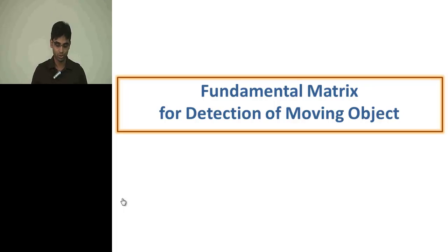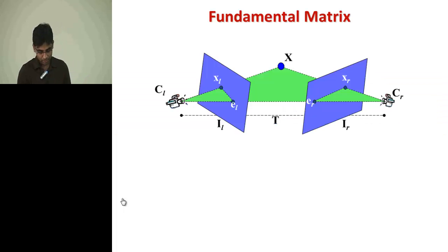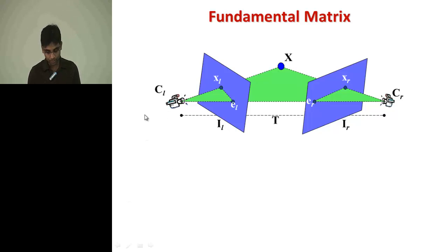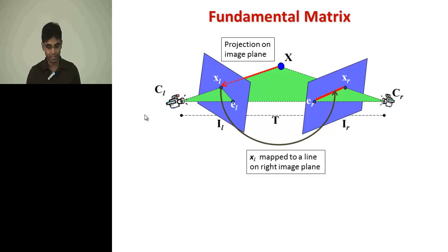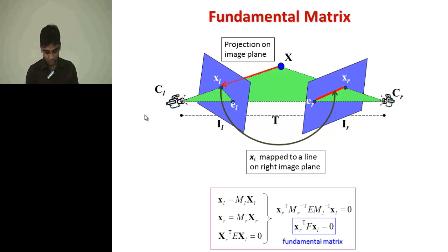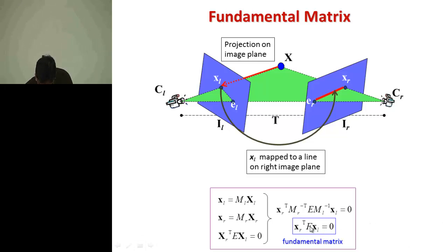We try to solve this problem using a fundamental matrix based approach, which we hope solves the problem related to perspective variance. This figure shows two cameras — left and right — observing a point X. The projection of the point on the left camera image plane is XL, which can be mapped to the right camera image plane with a line ER XR, which is the epipolar line.